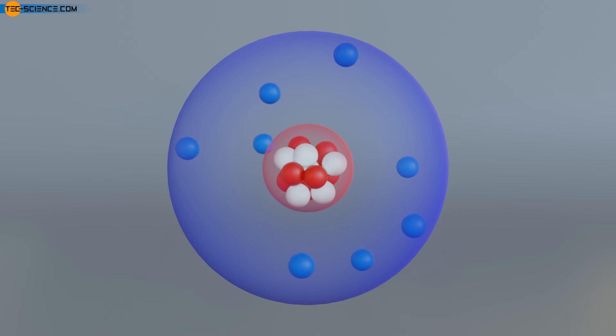Note that the number of protons of an atom is specific for each element and therefore an ion can only be created by removing or adding electrons, but not by removing or adding protons. Because if you would change the number of protons, a completely different element would be created.